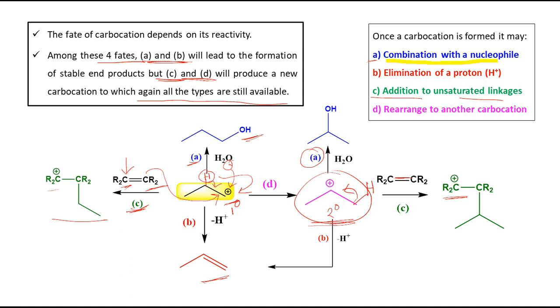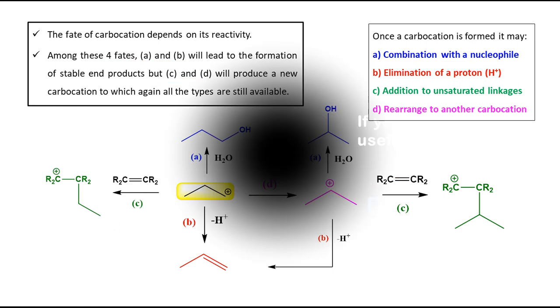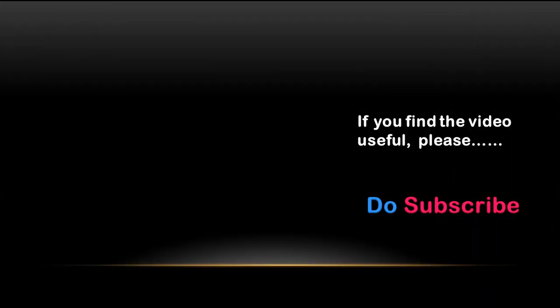All these possibilities have been shown with this carbocation example because it was not possible to do so with the left-hand side general structure, since we don't know exactly what groups are present — it depends on the specific case. From these examples, I hope it is now clear what the different possibilities or fates you can expect from a carbocation are. That is all for this video. If you find it helpful, please subscribe. Thank you for your time.